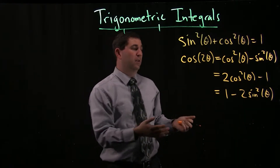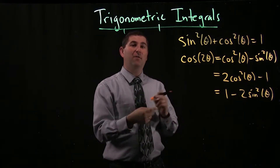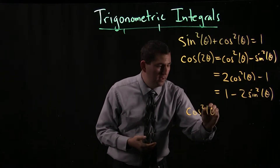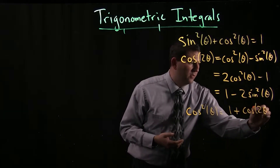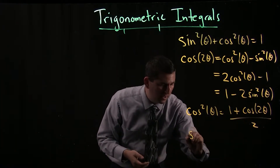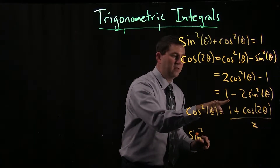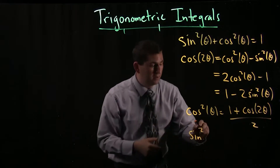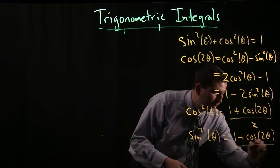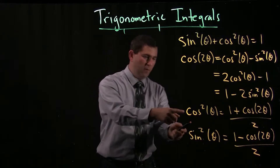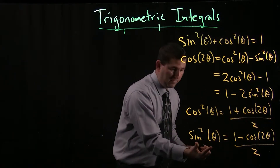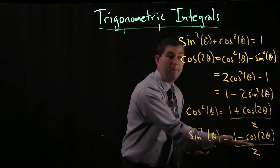We can do that. If I take this formula, I can solve for cosine squared. You add one, divide by two, and we get cosine squared theta equals one plus cosine of two theta over two. What if I solve for sine squared theta? Pretty much the same thing, except when I subtract, I get a minus, and things switch around a little bit. I end up with sine squared theta equals one minus cosine two theta over two.